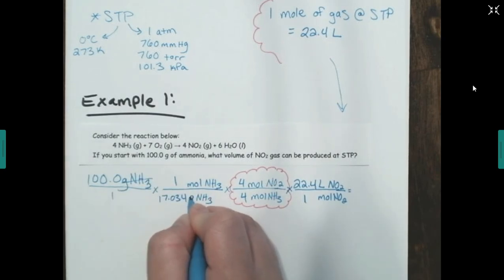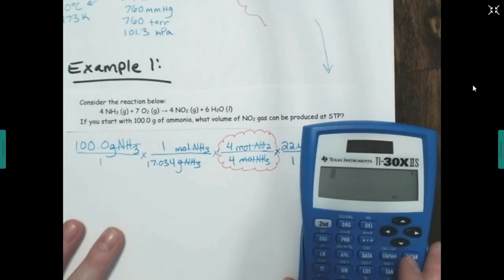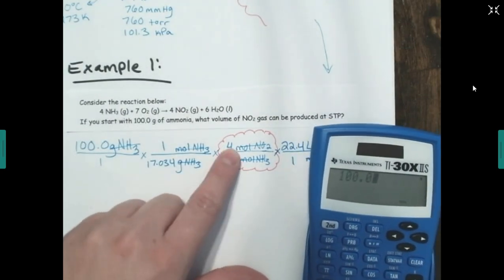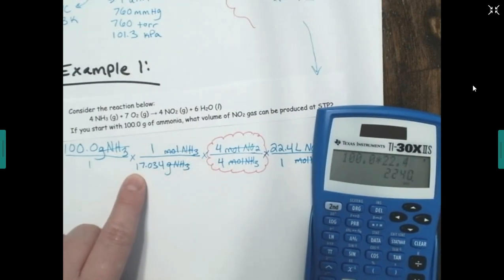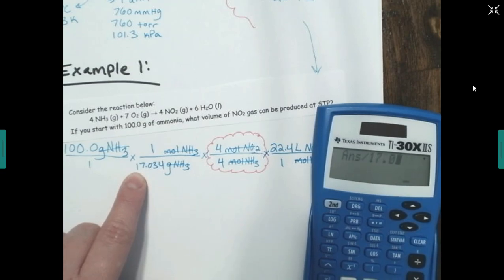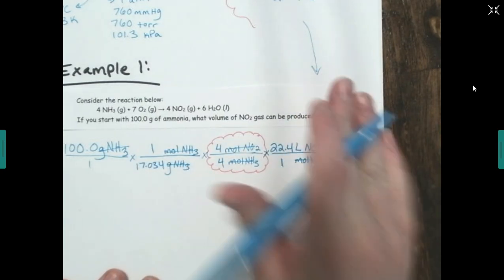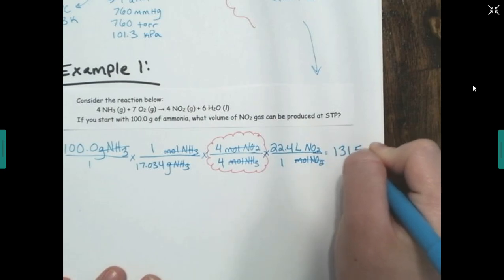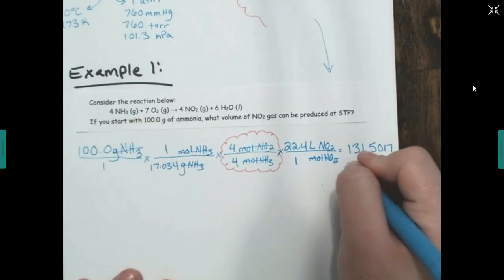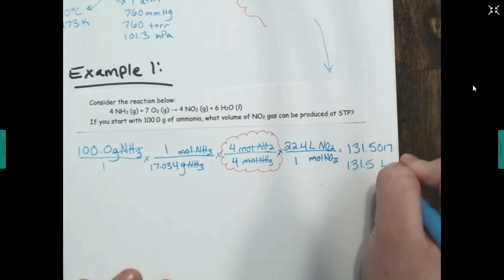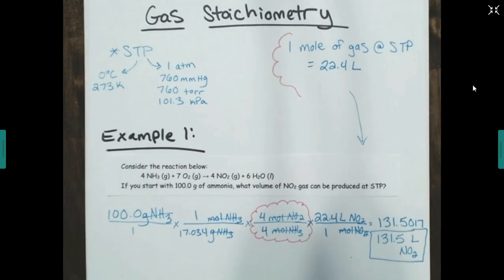Since we're at STP, one mole equals 22.4 liters. The 4 over 4 in the mole ratio cancels out, so I calculate: 100 times 22.4 divided by 17.034. The unrounded answer is 131.5017. We need three sig figs, so the final answer is 131.5 liters of NO2. That's how you do gas stoichiometry problems at STP — just use the 22.4 liter trick.